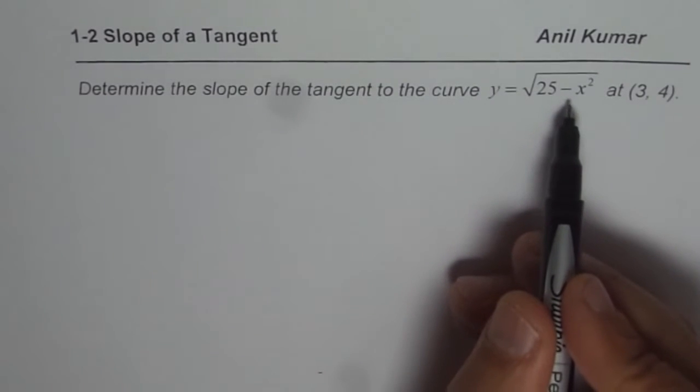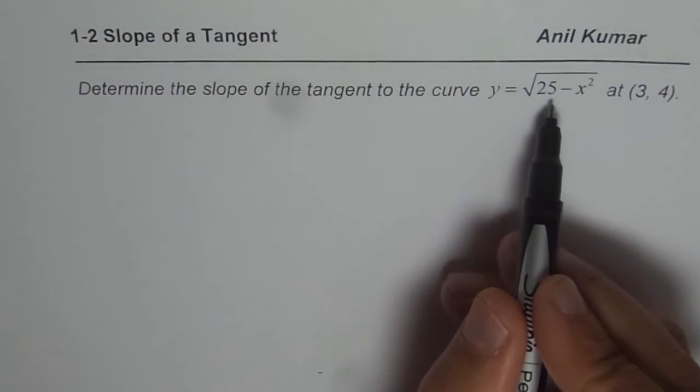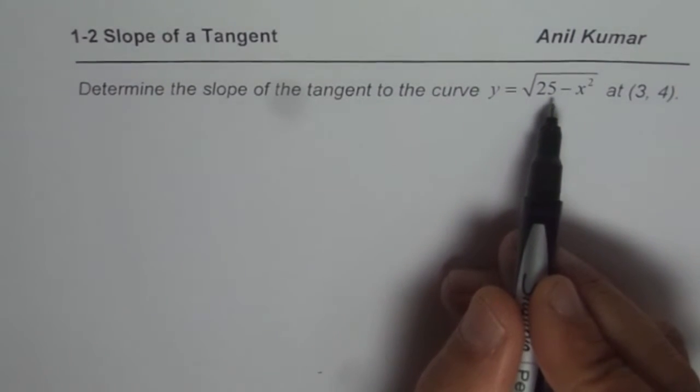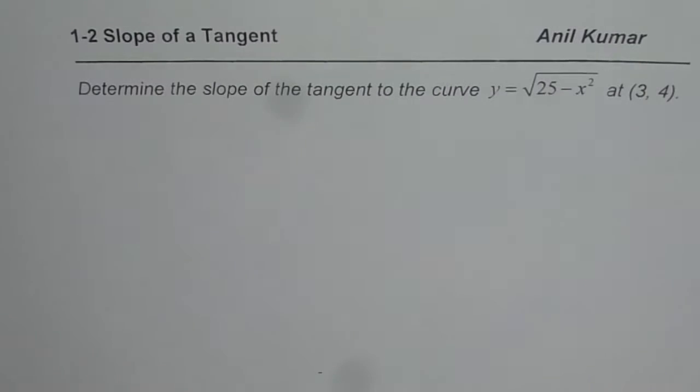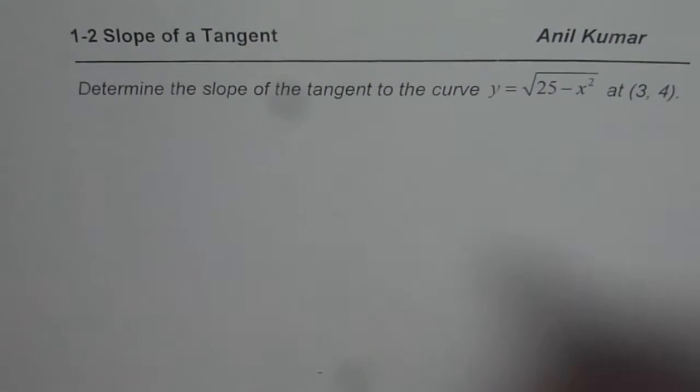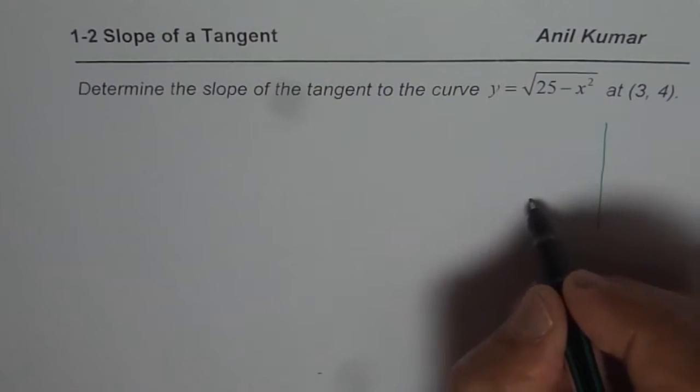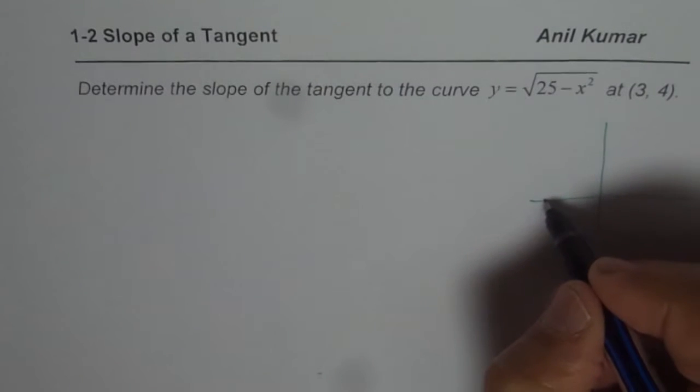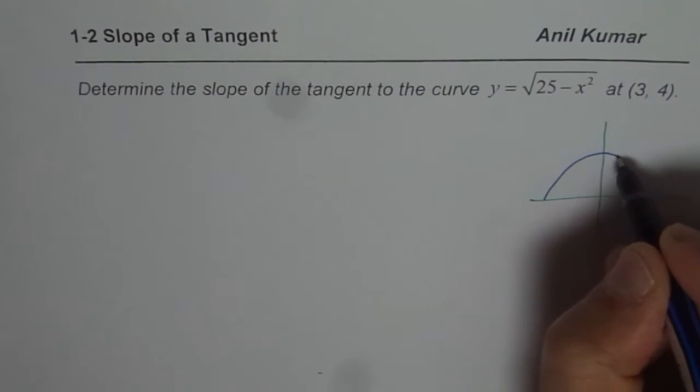Now this equation represents a semicircle whose radius is 5 units. So that is how we can look into this function. You can actually graph this and then understand what we are trying to do. So basically we have a semicircle here whose radius is 5 units.